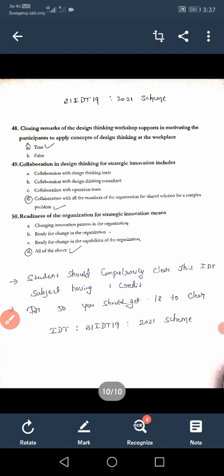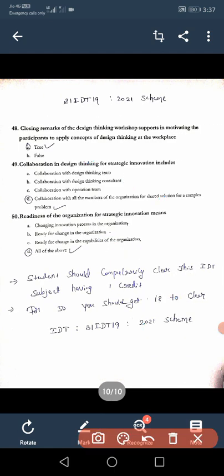Forty-seventh: During design thinking workshop, providing introduction is important to engage participants? Yes. Forty-eighth: Closing remarks of the design thinking workshop supports in motivating the participant to apply concepts of design thinking at the workplace? True. Forty-ninth: Collaboration in design thinking for strategic innovation includes D, collaboration with all the members of the organization for solving complex problems. Fiftieth: Readiness of the organization for strategic innovation means changing the innovation process, ready for the change in organization and capabilities, and all the above.